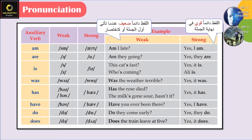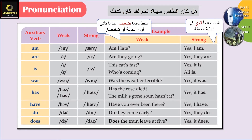'Was' — weak form: 'wəz', strong form: 'was'. In a question it is weak, so we say: 'Was the weather terrible?' In a short answer it becomes strong: 'Yes, it was.'